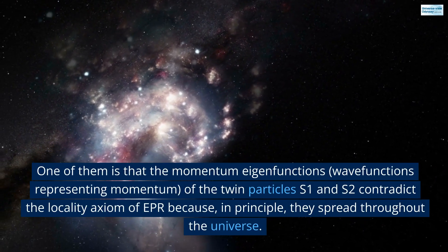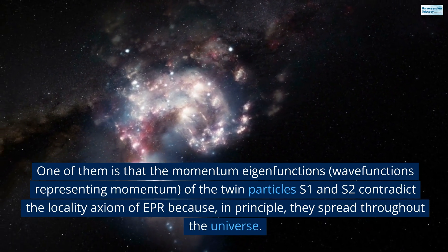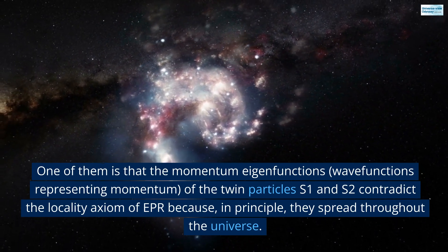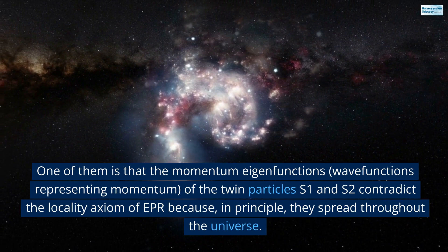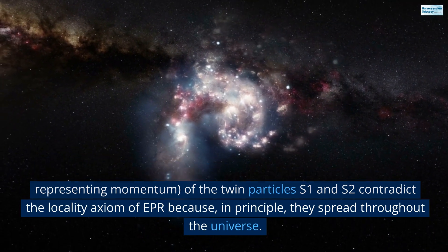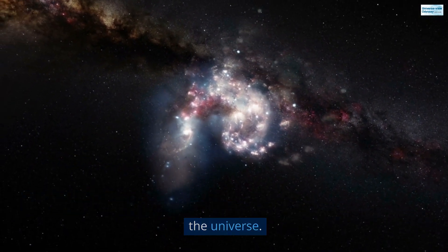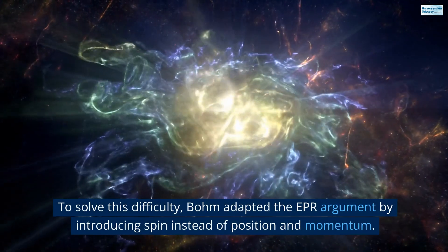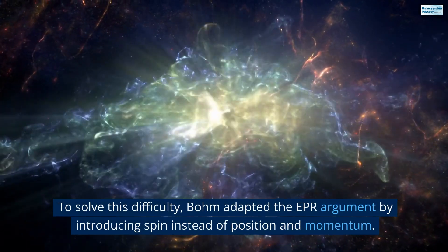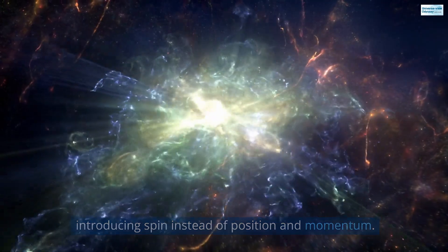One of them is that the momentum eigenfunctions, wave functions representing momentum, of the twin particles S1 and S2 contradict the locality axiom of EPR because, in principle, they spread throughout the universe. To solve this difficulty, Bohm adapted the EPR argument by introducing spin instead of position and momentum.